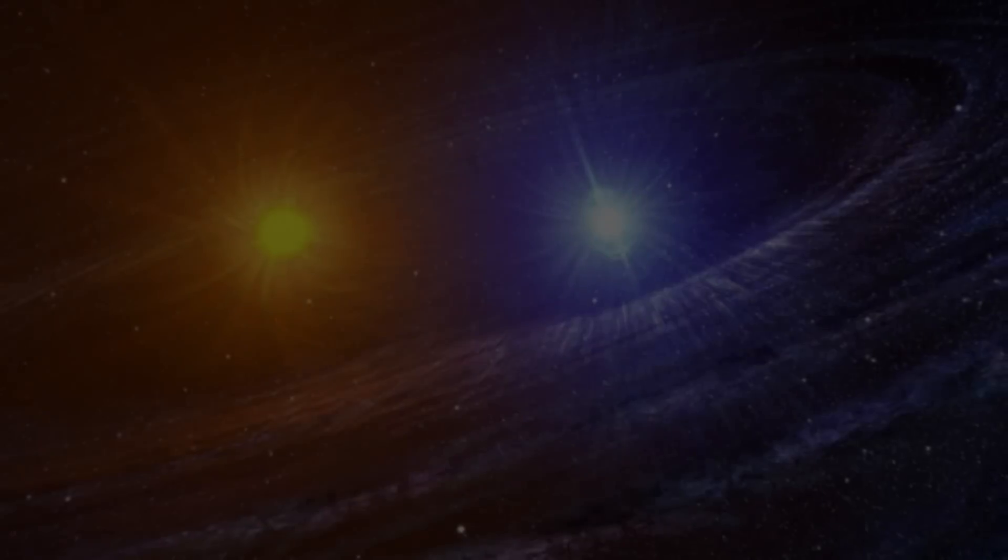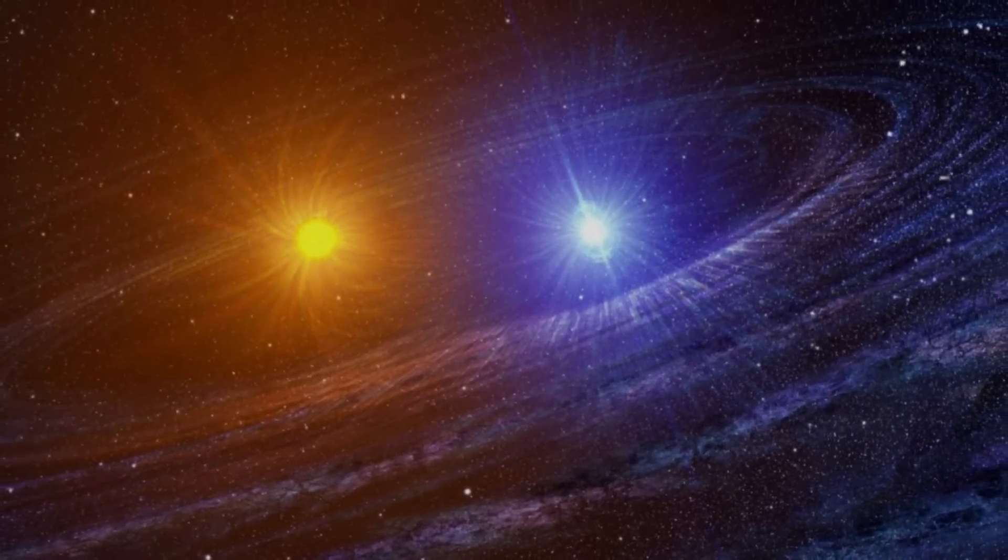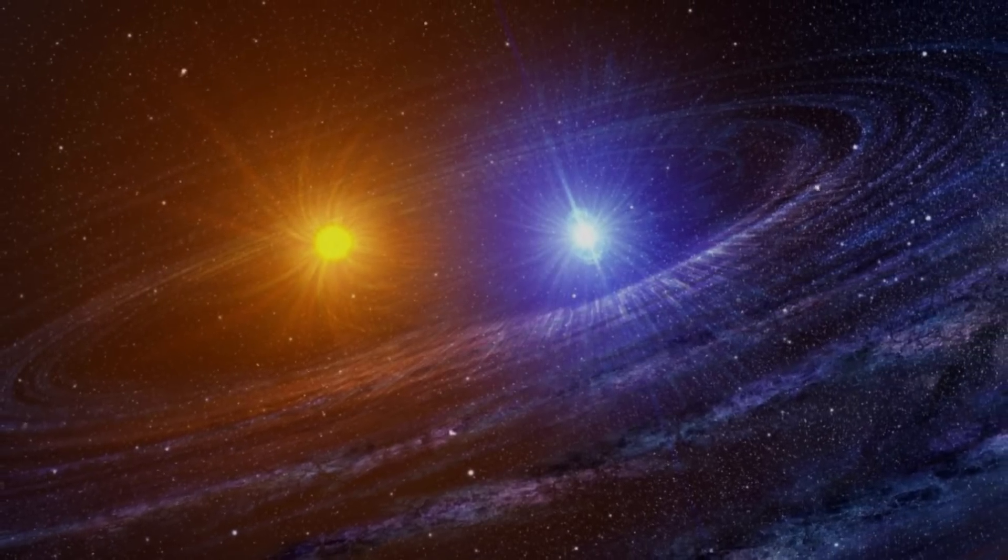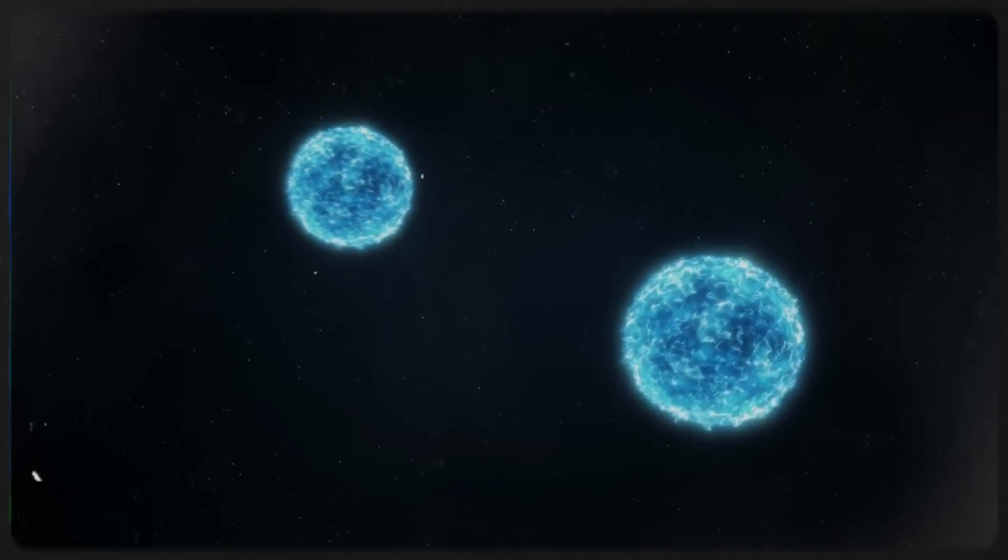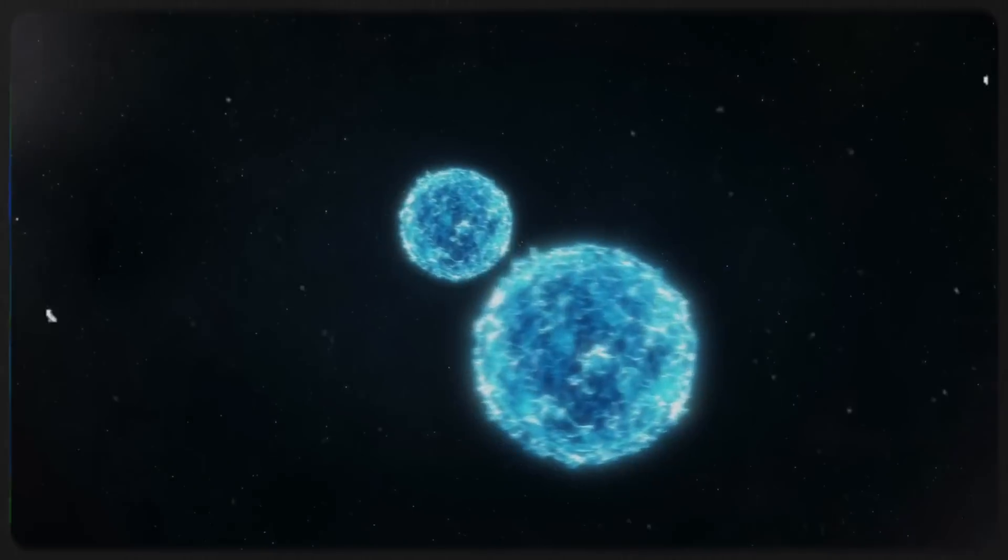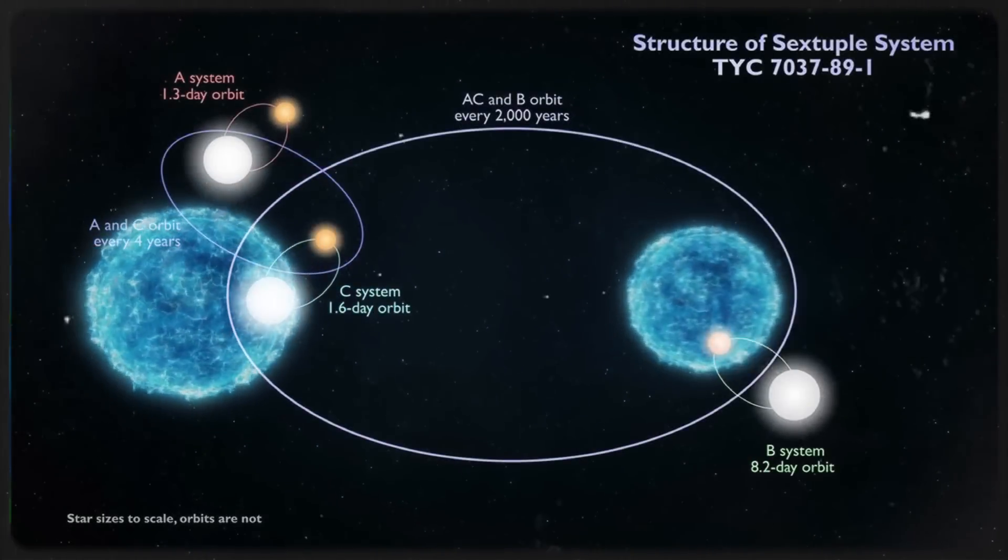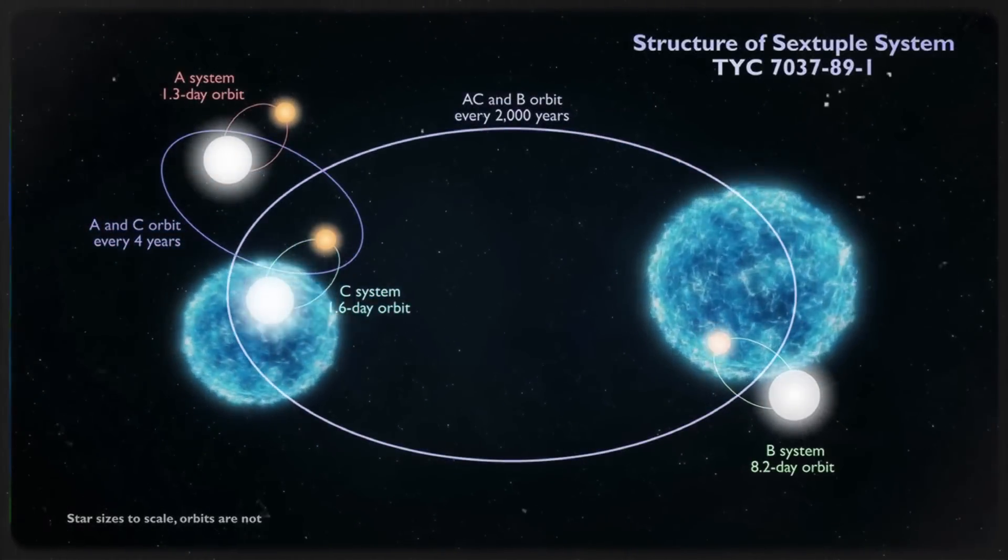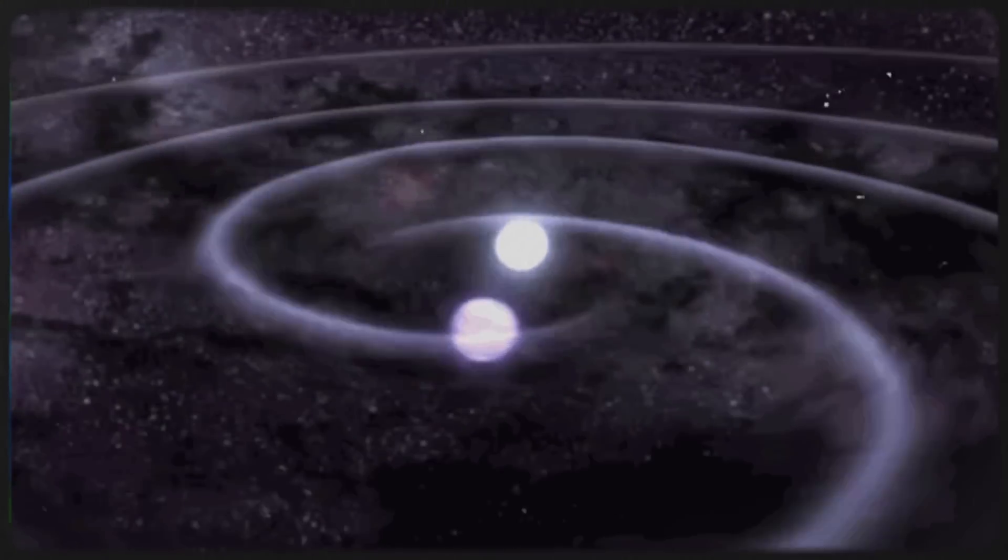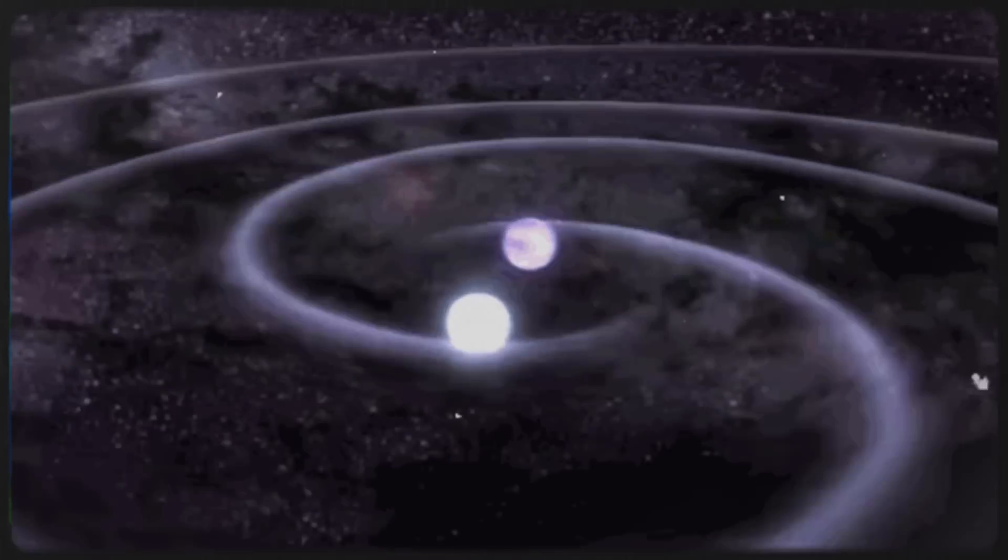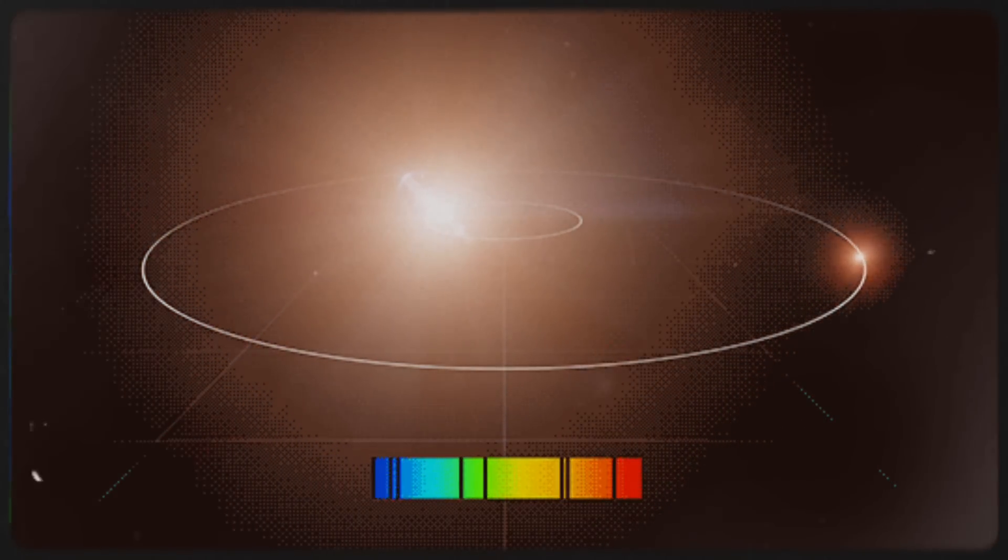The observatory also uncovered a remarkable binary star system encircled by at least 17 concentric rings of dust. These rings are not static structures, but dynamic imprints of the star's orbital interactions. Every eight years, as the two stars draw closer in their elliptical dance, their gravitational and stellar winds trigger the formation of a new dust ring. Over time, this recurring process has produced a striking pattern that resembles the growth rings found in tree trunks or the intricate swirls of a fingerprint. Each ring serves as a cosmic timestamp, preserving a detailed record of the system's orbital history and offering astronomers valuable insights into the physics governing binary star evolution.